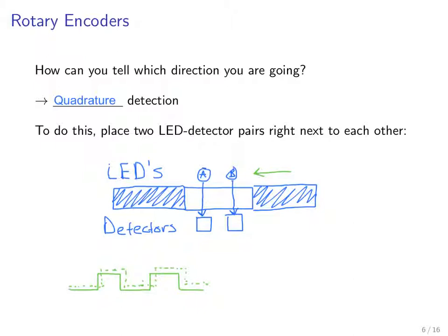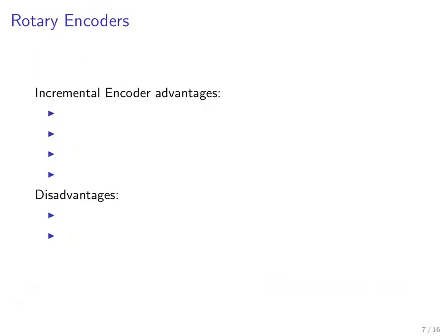On the other hand, if we are going the other way, then the opposite will be true. In this case, A will lead. So you can appreciate the difference between these two waveforms depending on which direction we're going. Now we've fully described the incremental encoder.